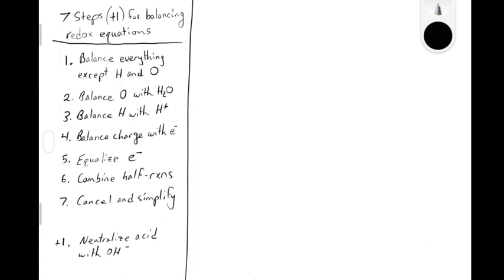When you're balancing redox reactions, you typically start from a skeletal reaction. This skeletal reaction may or may not be a redox reaction. If you're unsure, you have to check by looking for oxidation number changes between the reactant side and the product side. In this example, the easiest oxidation numbers to check come from the chloride ion and the Cl2 molecule. The oxidation state for Cl⁻ is negative one, and the oxidation state for Cl2, which is chlorine in its elemental state, is zero. There's been an oxidation number change, therefore you have a redox reaction.